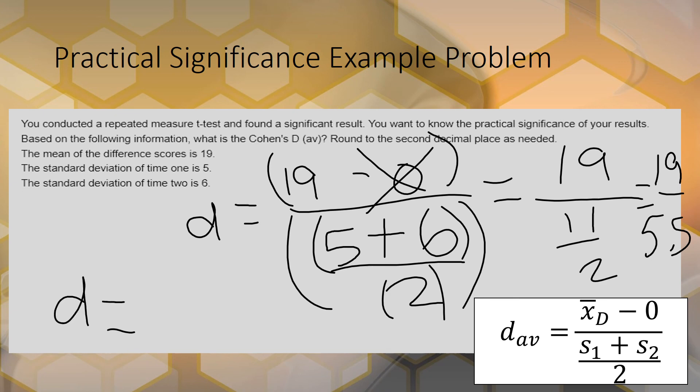If you want to round it to the second decimal place, that would be 3.45 because the next digit is a 4, so you round down. That would be the Cohen's D for that, which is actually really big. And that's it.